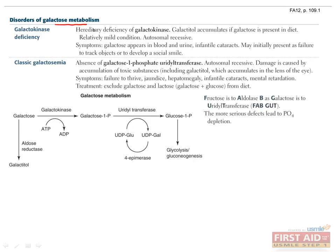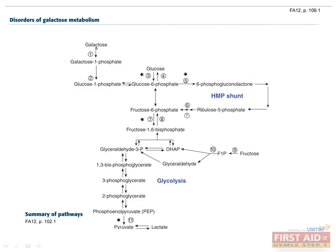In general, disorders of galactose metabolism are more serious. In galactose metabolism, galactose is converted into glucose, so it can be used in glycolysis. This mostly takes place in the liver, but other tissues also metabolize galactose to a lesser extent.